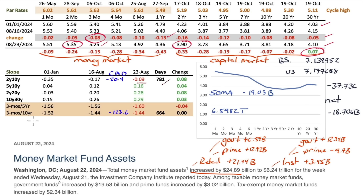The money market to capital market inversion is still very deep at 1.44 — that's not going to change until you actually start getting cuts. The 3-month will be anchored very closely to the effective federal funds rate, but it is coming down. Canada is still inverted. Fed balance sheet: down $37.76 billion. The SOMA ran off $19 billion, so the Fed balance sheet is down $18.7 billion this week. The securities portfolio is $6.59 trillion.